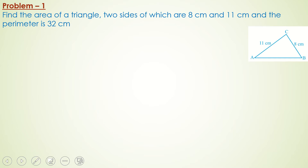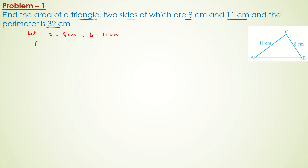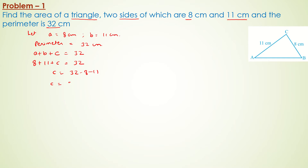In the first problem, we have to find the area of a triangle whose two sides are given as 8 centimeters and 11 centimeters, and the perimeter is 32 centimeters. Let side a = 8 cm, b = 11 cm. Since a + b + c = 32, the third side c = 32 − 8 − 11 = 13 centimeters.